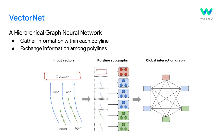Instead of working in pixel space, we convert the HD map and the agent trajectory to polylines, and those polylines are further split into vectors. Given such vector representation, we design a novel hierarchical graph neural network called VectorNet.